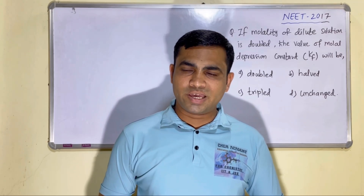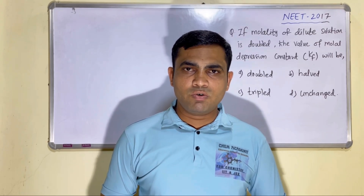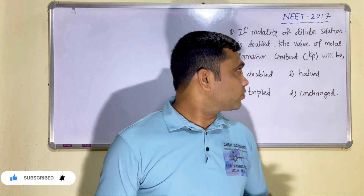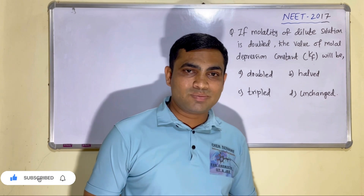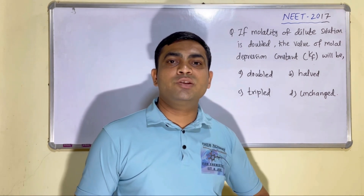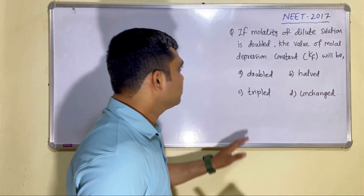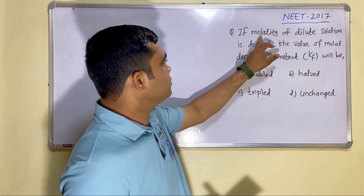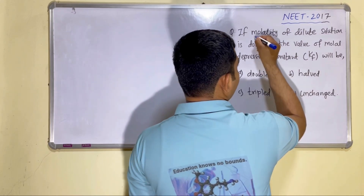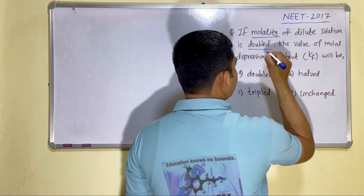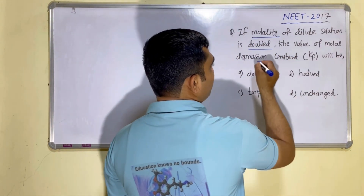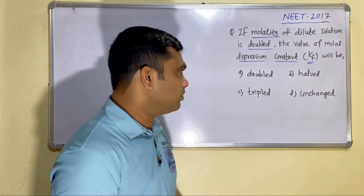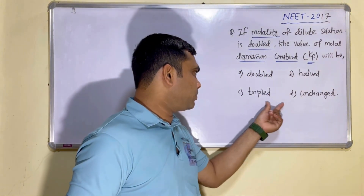Hello, welcome all to the Chem Academy. In today's video we will discuss one question which is quite theoretical. The question is based on the concept of the molar depression freezing point constant. This question was asked for NEET 2017. The question is: if molality of the solution is doubled, the value of molar depression constant Kf will be — double, triple, or remain unchanged? We have to identify it.